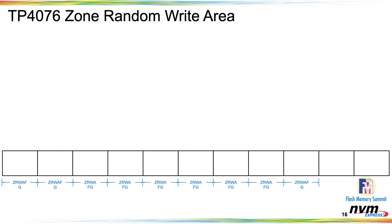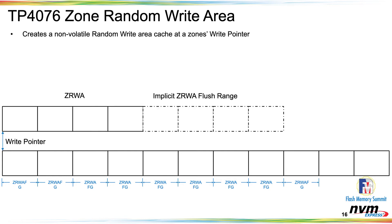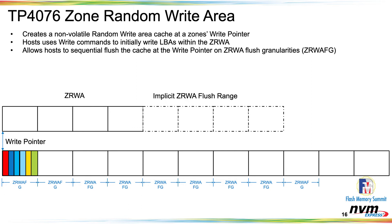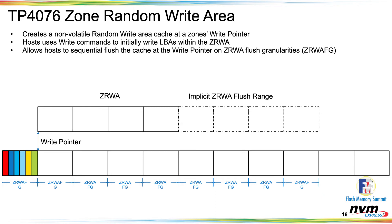Another TP that came in after the NVMe 2.0 specifications is TP 4076, the Zone Random Write Area (ZRWA, or Xura). At the bottom is a standard zone from the Zoned Namespace NVM command set. What Xura adds is a persistent cache before the zone namespace. You're able to random write into that Xura cache. A host can write to the controller into the Xura and then send a command to flush a granularity into the write pointer of the zone. We're still writing into the zone sequentially because zones require sequential writes, and the write pointer moves down to keep the cache in front at the write pointer.